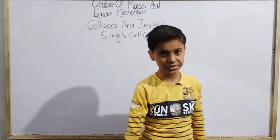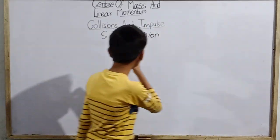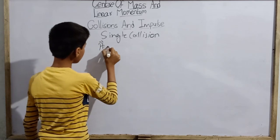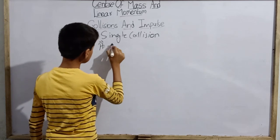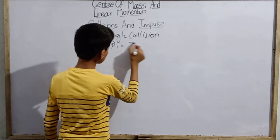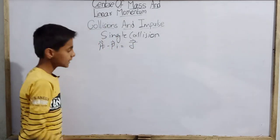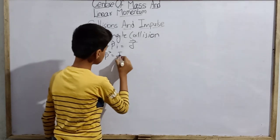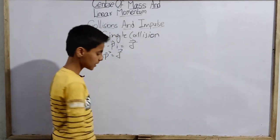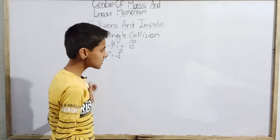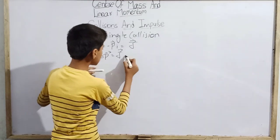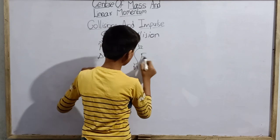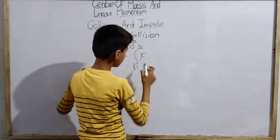Since we have vector p_f minus vector p_i equals vector J, that is delta vector p equals vector J, we can also break this into components easily: the integral from t1 to t2 of vector F dt. This is the impulse-momentum theorem.